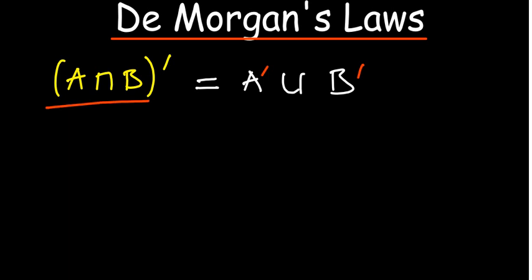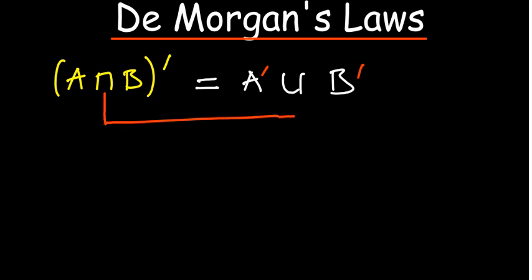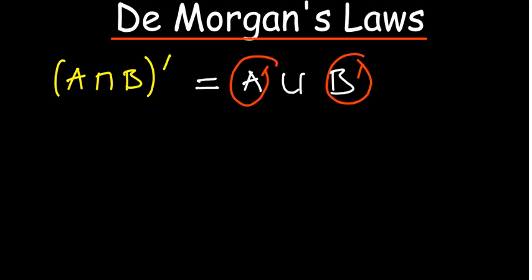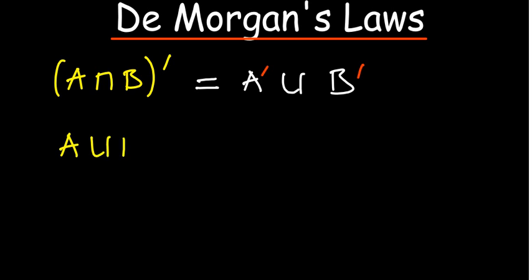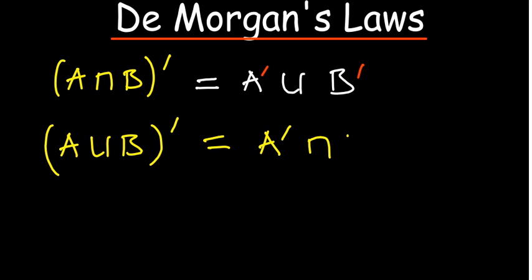Consider a case where you have A intersection B in brackets and then a complement outside. What will basically happen is we expect the notation in between to change from intersection to union. Then we expect that set A becomes A complement and B complement as well. So you might guess what the other De Morgan's law tells us — if you have a union, you expect it will become an intersection in between.